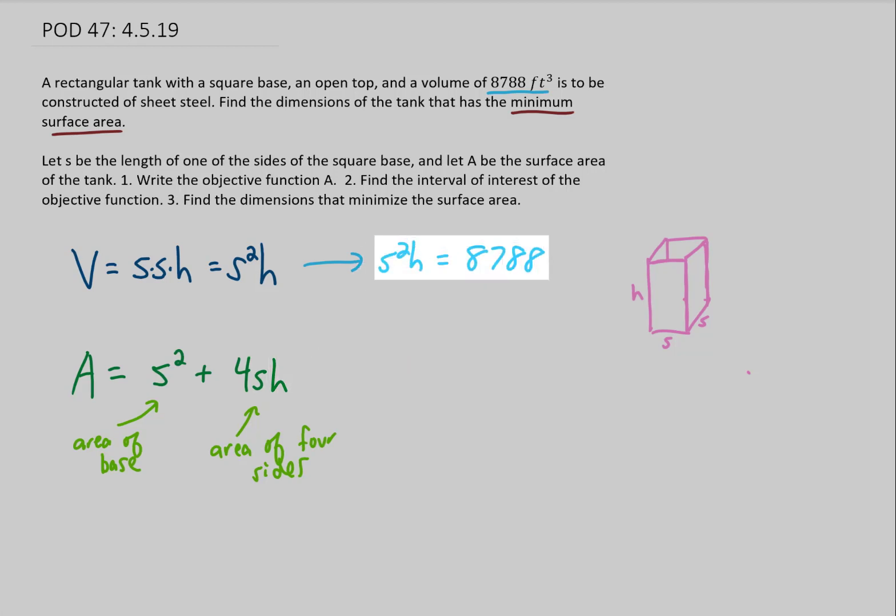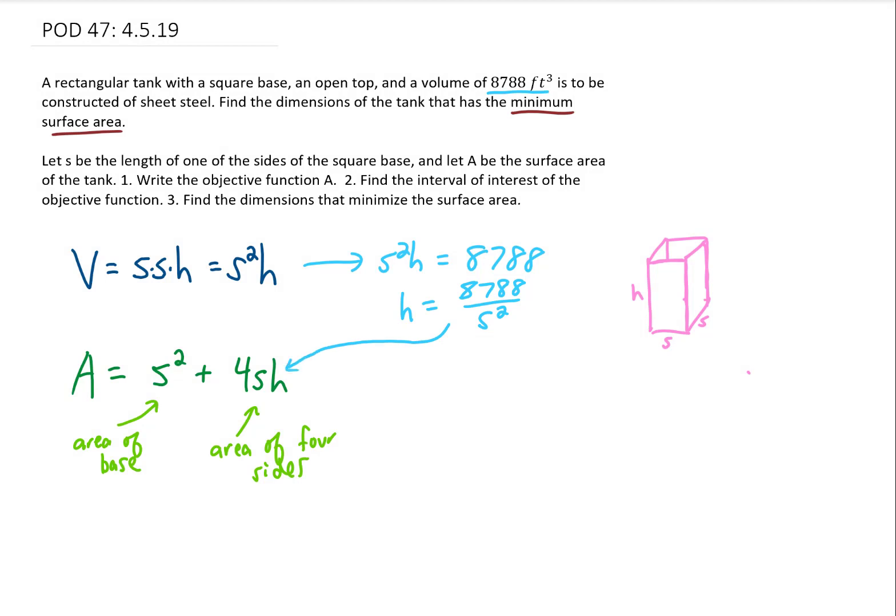The way that I'm going to do that is I'm going to solve this equation up here for H. I'm going to do that by dividing both sides of the equation by S squared. And then I'm going to plug this formula that we got for H in right here. That gives us a new formula for A.